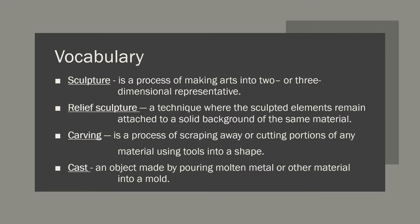Carving is a process of scraping away or cutting portions of any materials using tools into a shape. Cast is an object made by pouring molten metal or other material into a mold.